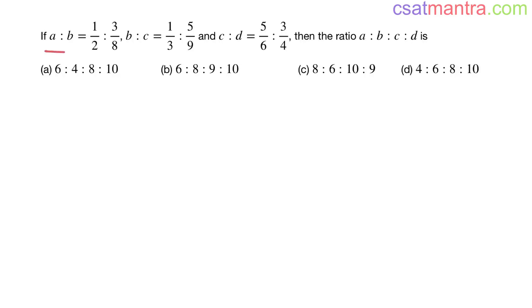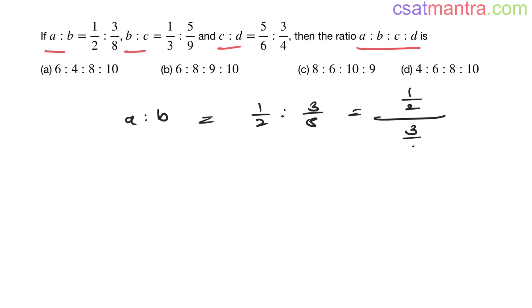Three ratios a:b, b:c, c:d are given and we are asked to find a:b:c:d. We have a:b as 1/2 : 3/8. You can write it as (1/2) divided by (3/8).